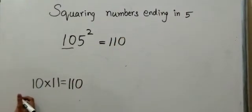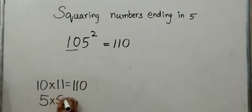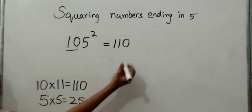Now multiply the 5 square. 5 times 5 is 25. Write 25 over here.